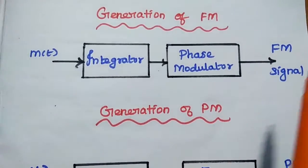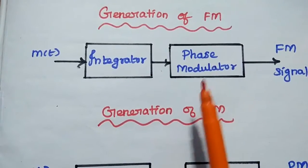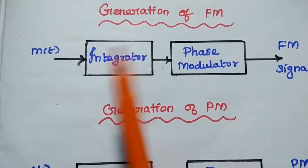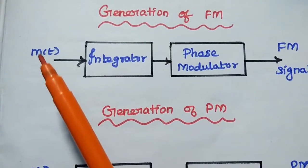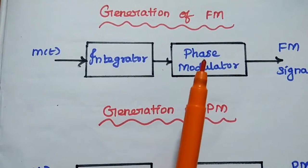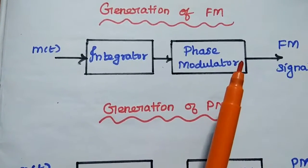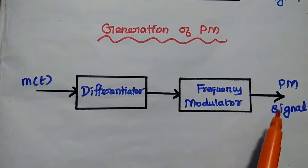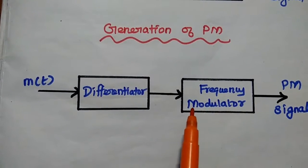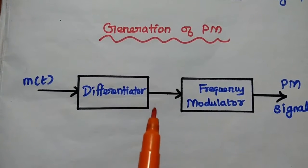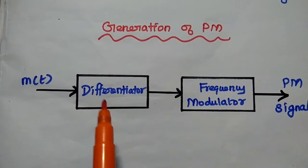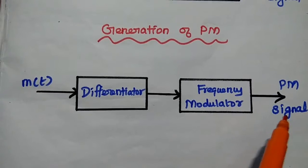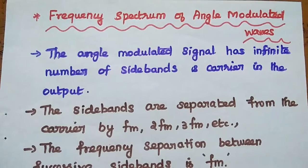A frequency modulated signal can be obtained using a phase modulator. In order to obtain the frequency modulated signal, the modulating signal — the message signal — is integrated and then given as the input to the phase modulator, and we obtain the frequency modulated output. Similarly, the phase modulated signal can be obtained using a frequency modulator. In this case, the modulating signal is differentiated and then given as the input to the frequency modulator to obtain the phase modulated signal.